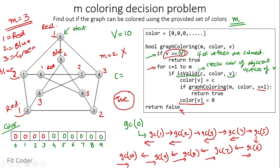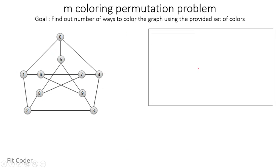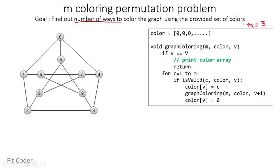We have checked whether graph coloring is possible using an M value. But to find how many different combinations are possible, that falls under the M coloring permutation problem. The pseudocode is almost the same, but instead of returning true we print the entire color array whenever all vertices are colored.